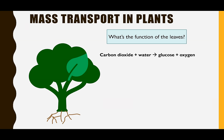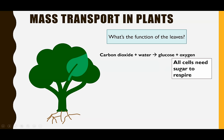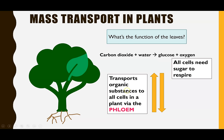The first thing is thinking about where these organic substances come from, and that takes us to the function of the leaves — one of the key functions being photosynthesis. Looking at the basic word equation: carbon dioxide plus water creates glucose and oxygen. It's this sugar component, the glucose, that we're interested in today. Glucose and other sugars are organic substances because they contain carbon, and all cells of a plant require glucose for respiration.